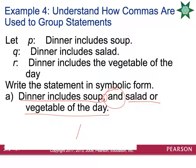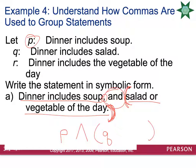On the left of the ∧: just P (soup). On the right, since there's more than one item, we use parentheses: (Q ∨ R). So the full symbolic form is P ∧ (Q ∨ R). Dinner includes salad is Q, vegetable of the day is R, and the connective or (∨) goes between them inside the parentheses.